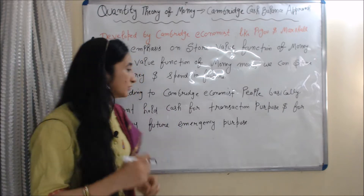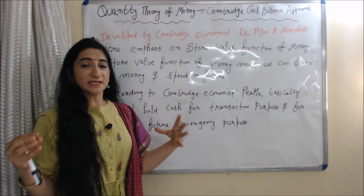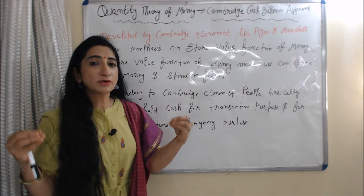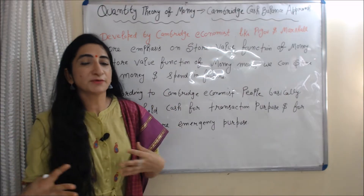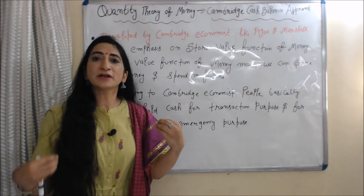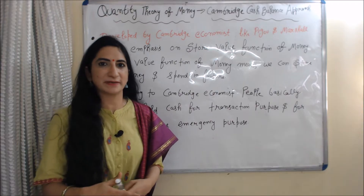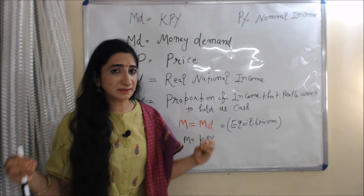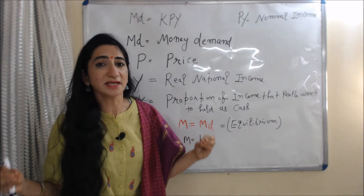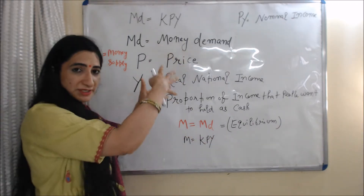According to Cambridge economists, people basically want to hold cash for transaction purposes and for any future emergency purpose. We will understand this theory with the help of an equation.